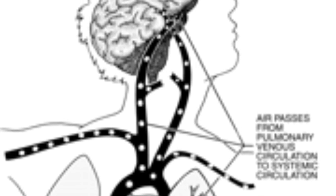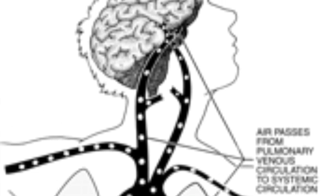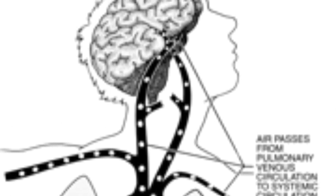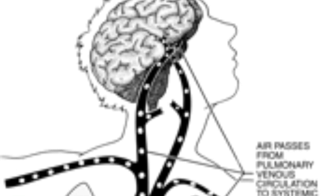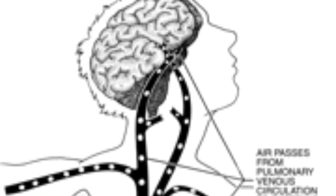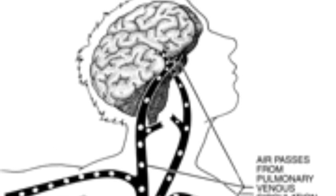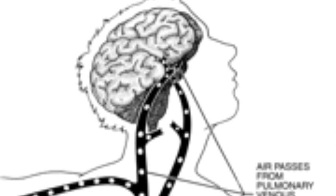This distributes them to the body tissues in proportion to the blood flow. Since the brain receives the highest proportion of blood flow, it is the main target organ, where bubbles may interrupt circulation in large and small arteries.